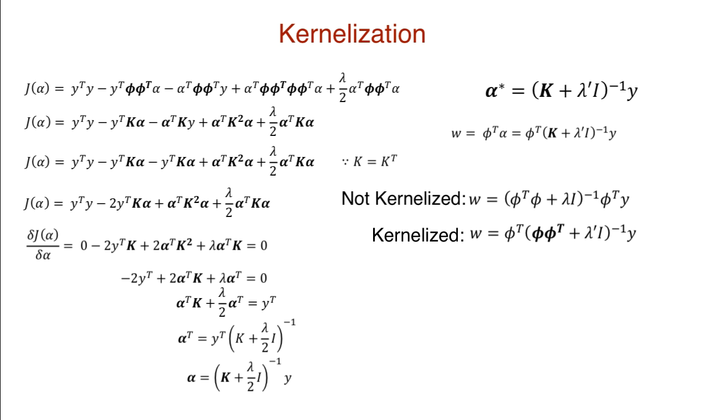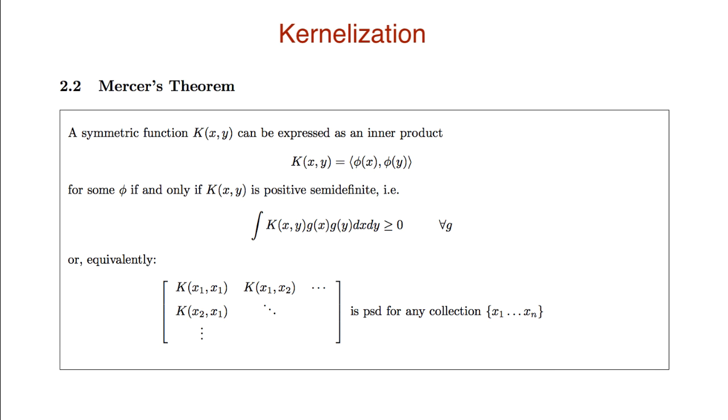Before, we had to compute phi transpose phi, which is the covariance matrix. But now we need phi phi transpose, the kernel matrix. But wait, it looks like to compute this inner product as well, we still need phi. However, that's actually not the case. I said before, this kernel matrix has two properties. One is that it's symmetric, and two is that it's positive semi-definite. According to Mercer's theorem, a symmetric positive semi-definite function can be expressed as the inner product of some phi.